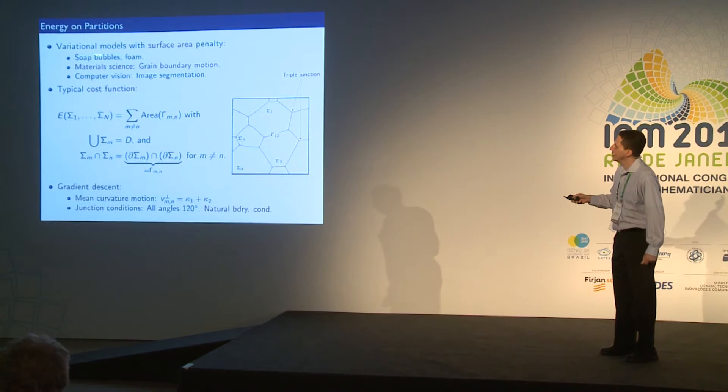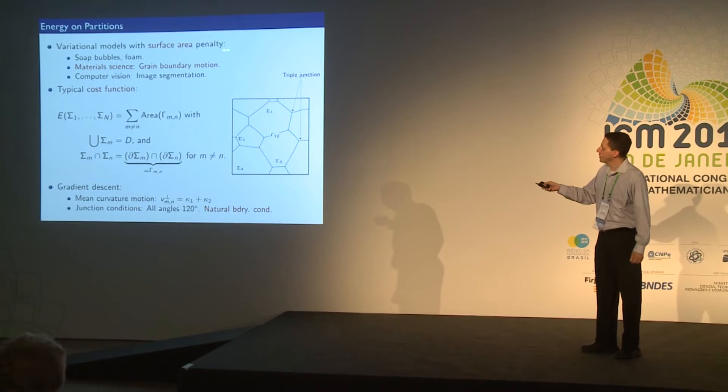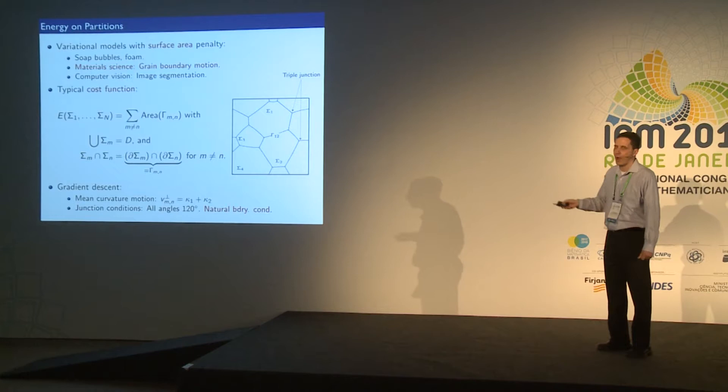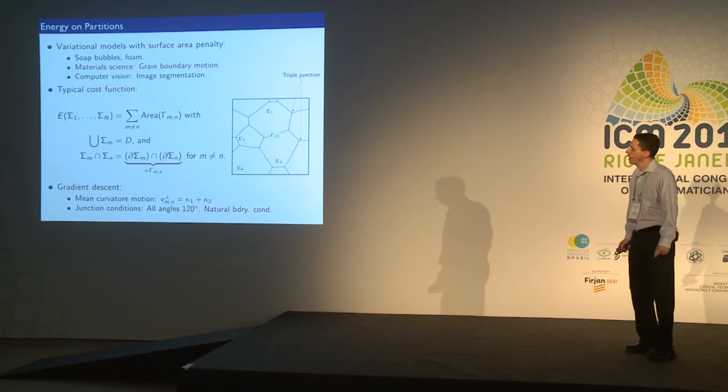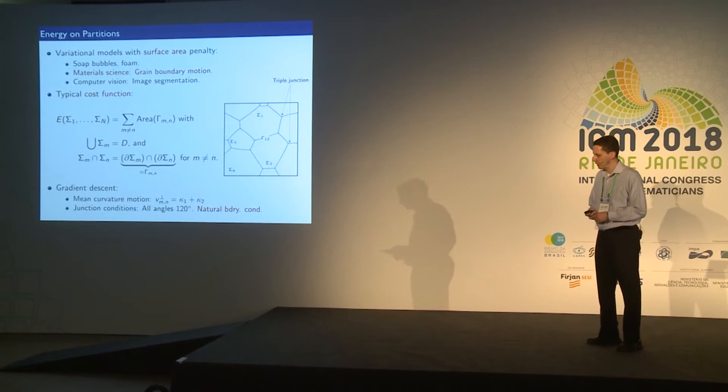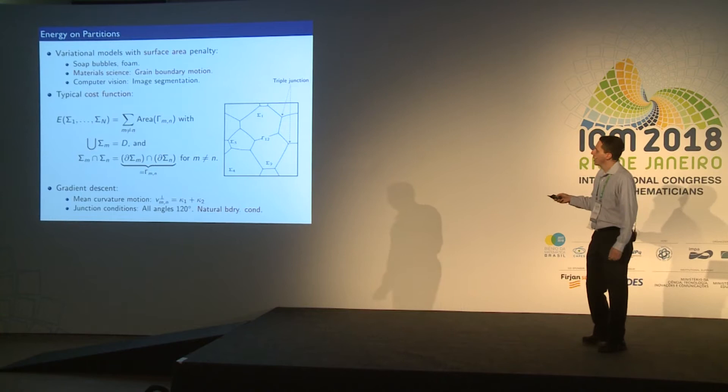Many applications in science and engineering entail variational models defined on partitions with some surface area penalty. Some very well-known examples include models for soap bubbles and foam. Most of our motivation comes from material science, where such models arise in describing grain boundary motion in polycrystalline materials. More recently they have found use in computer vision in the context of image segmentation, and even more recently in machine learning applications.